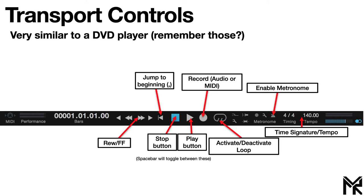Over here you have your time signature and tempo. If you remember when we were creating the project you had to set these — you can actually change them here. You can type in the tempo in beats per minute, and the time signature which is beats per bar and what type of note gets a beat. So 4/4 means there are four beats per bar and a quarter note gets a single beat.